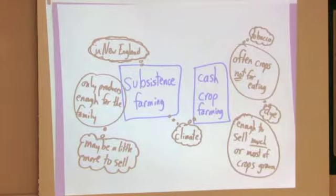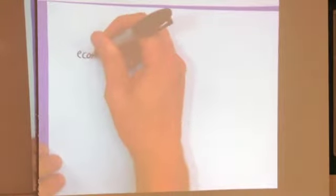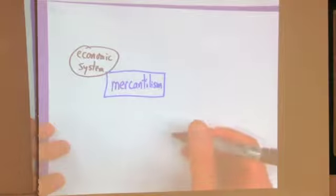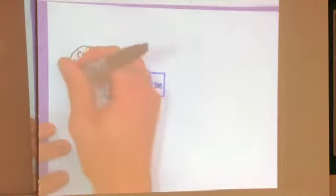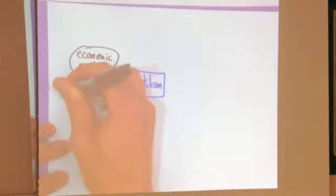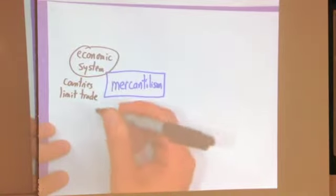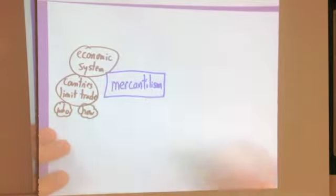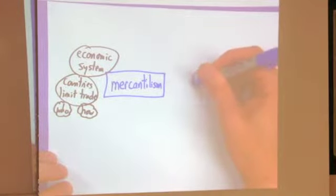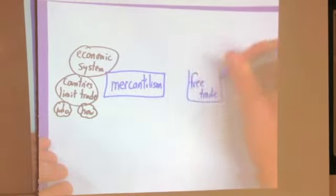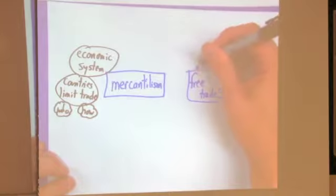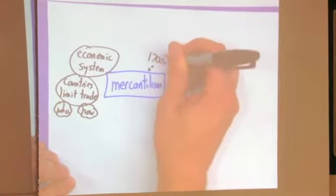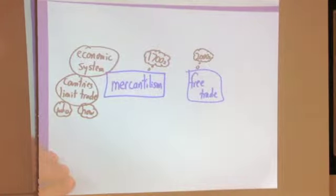So mercantilism is an economic system. It's a system of having a very specific kind of economy. In this kind of economic system, countries limit trade. It puts limits on who and how they're going to trade. So who they trade with and how is very carefully done. In these days we have more free trade. So this would be in today's world, in the 2000s, you could be thinking of free trade. Mercantilism was very much more popular in the 1700s. So that's one important difference.